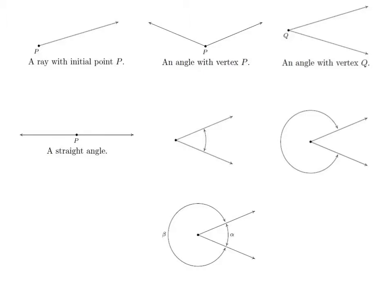If you have two rays starting at the same point, that point is called the vertex, and that will create an angle. So for example, this is an angle with vertex Q.